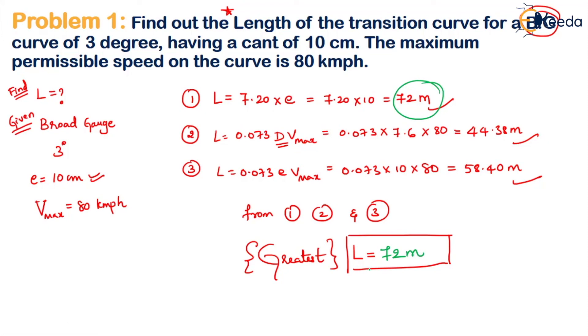This is how you solve problems on finding the length of transition curves. You should be careful with the standard cant deficiency values based on gauge type and maximum speed. Hope the problem is clear. Thank you.